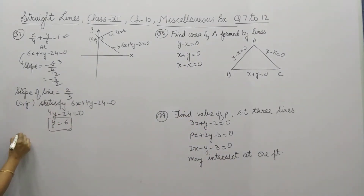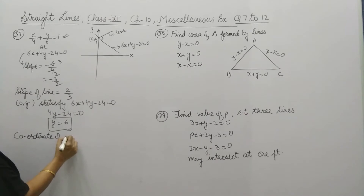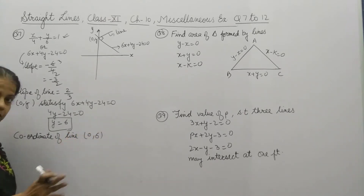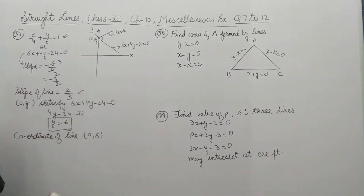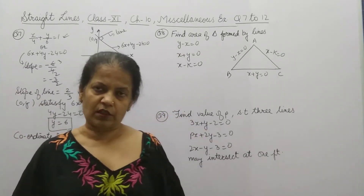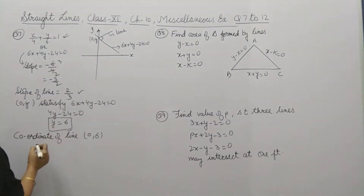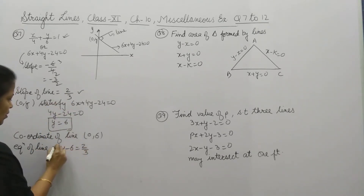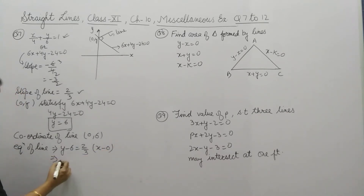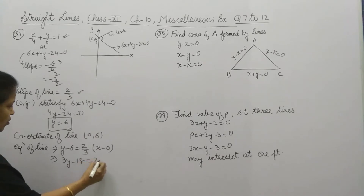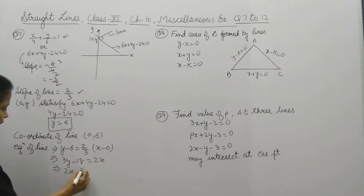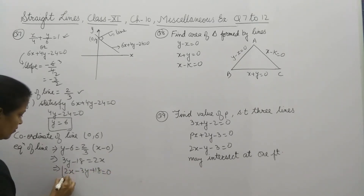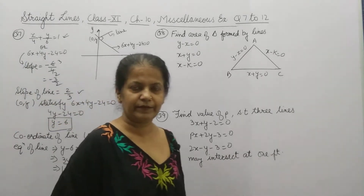So the coordinate of the point on the given line at the y-axis is (0, 6). Now one point is given and the slope is also given, so we can make the equation of the line using the point-slope formula: y - y1 = m(x - x1), with slope 2/3. Solving further: 3y - 18 = 2x, or 2x - 3y + 18 = 0. This is the equation of the line.